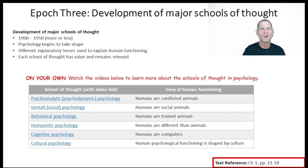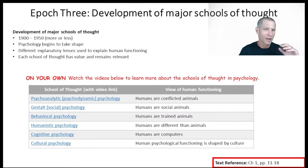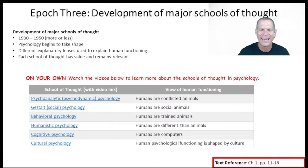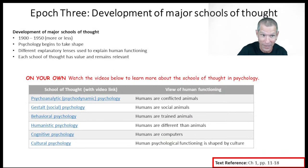From 1900 to 1950, we had different famous psychologists come out and say 'this is the best way to study human beings.' Sigmund Freud said the best way is to study us as conflicted animals. Max Wertheimer, the social psychologist, said no — the best way is to study human beings as group animals. B.F. Skinner, the behaviorist, said the best way is to study human beings as animals that become trained like dogs and cats. Abraham Maslow said we need to study exactly what makes humans different from animals.